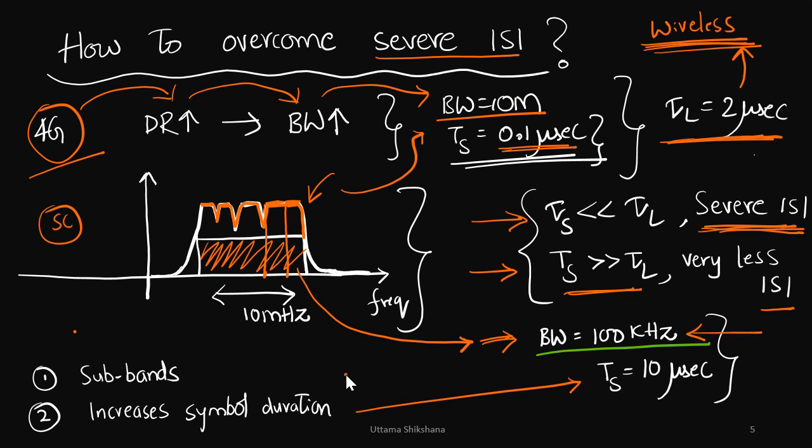The subband size is let's say 100 kHz, then the symbol duration is increased to 10 microseconds, which is actually greater than the delay spread. These strategies can be used to reduce the severe ISI, but the question is how to implement this subband logic so that it is feasible, less costly, and practically possible.